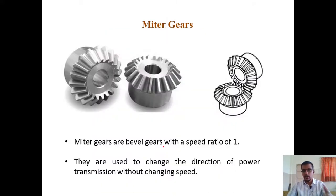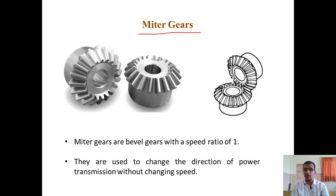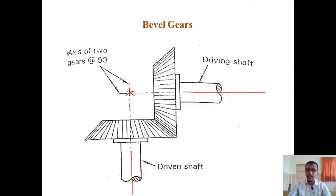Mitre gears are a classification of bevel gears with a speed ratio equal to 1 — the number of teeth on the driver equals the number of teeth on the driven. There is no change in speed; the driven rotates at exactly the same speed as the driver. The axes of driver and driven intersect at a point, which is the classic example of an intersecting shaft gear.